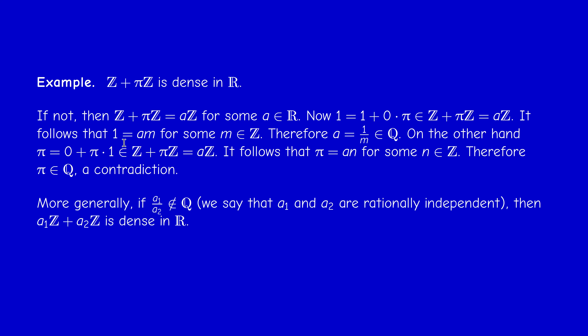More generally, if you take two real numbers whose ratio is irrational — in this case we say the two numbers are rationally independent — then A₁Z + A₂Z is also dense. Same reasoning. Try to write the proof.